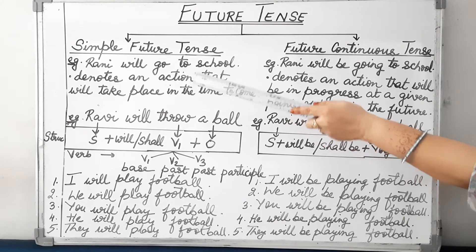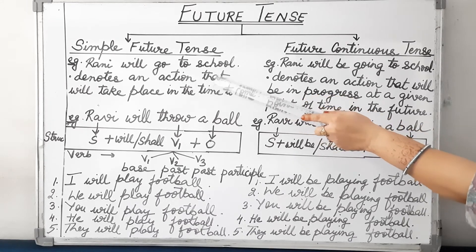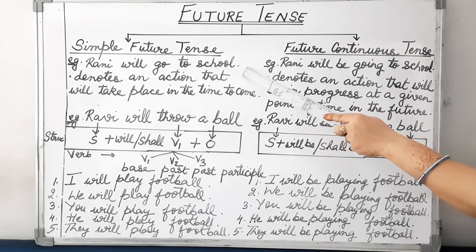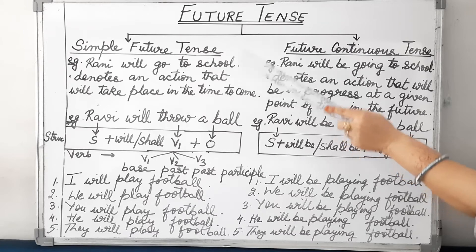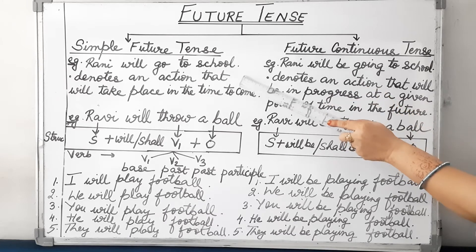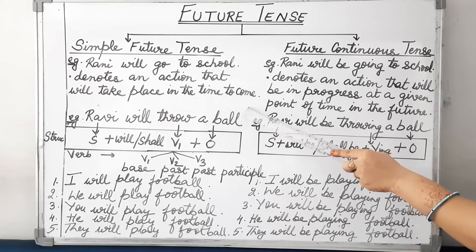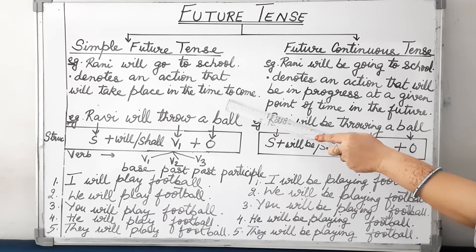The example is: Rani will go to school. This example is denoting an action which will happen in future. Simple future tense denotes an action that will take place in the time to come, or in future.